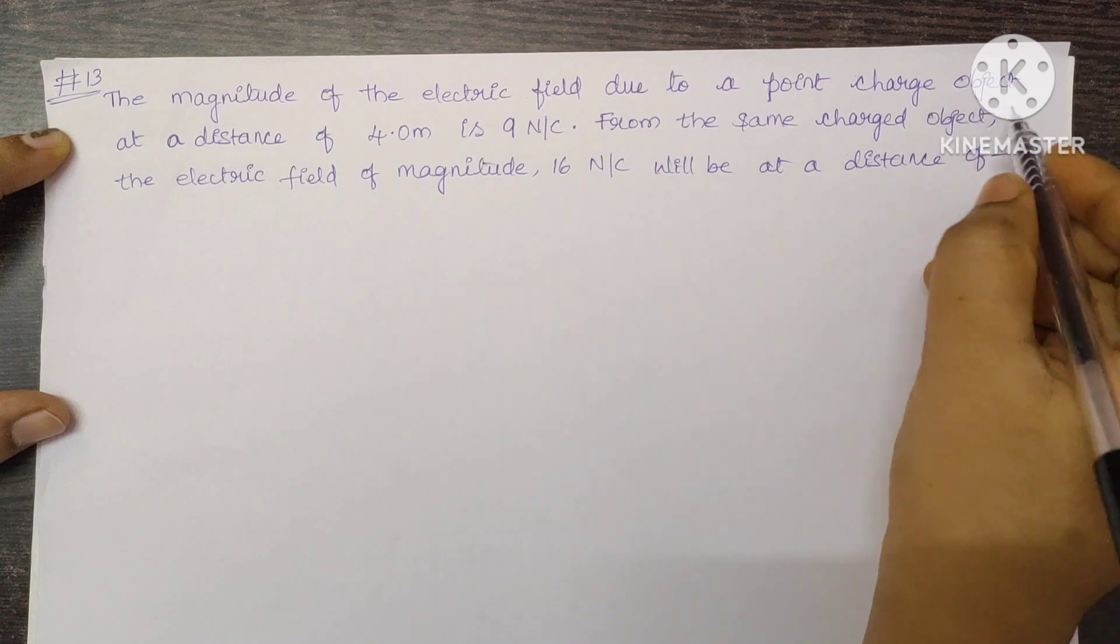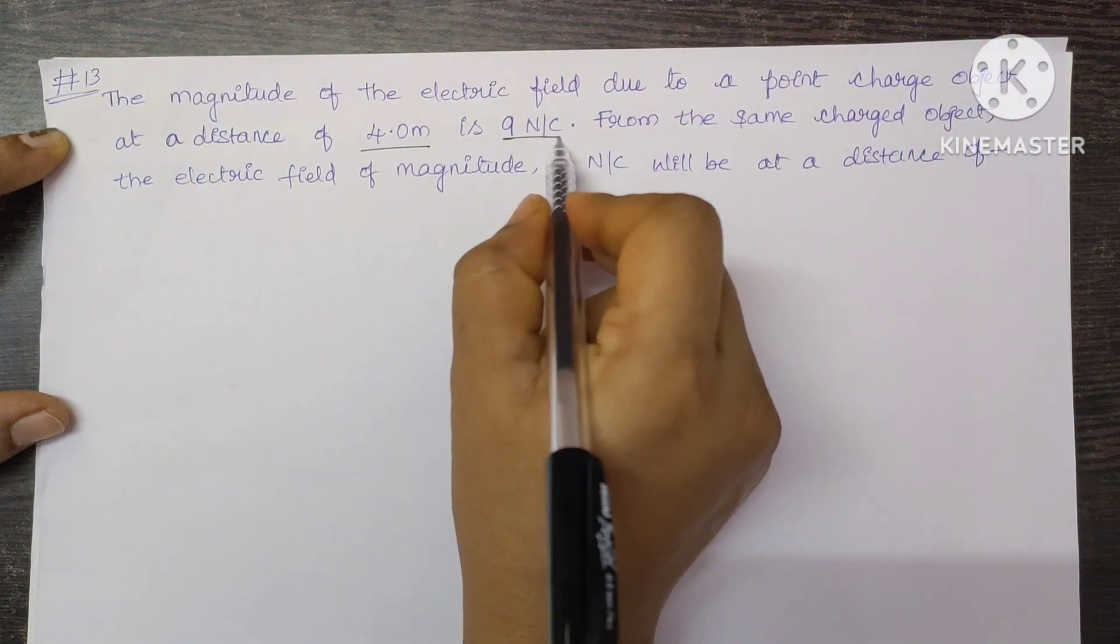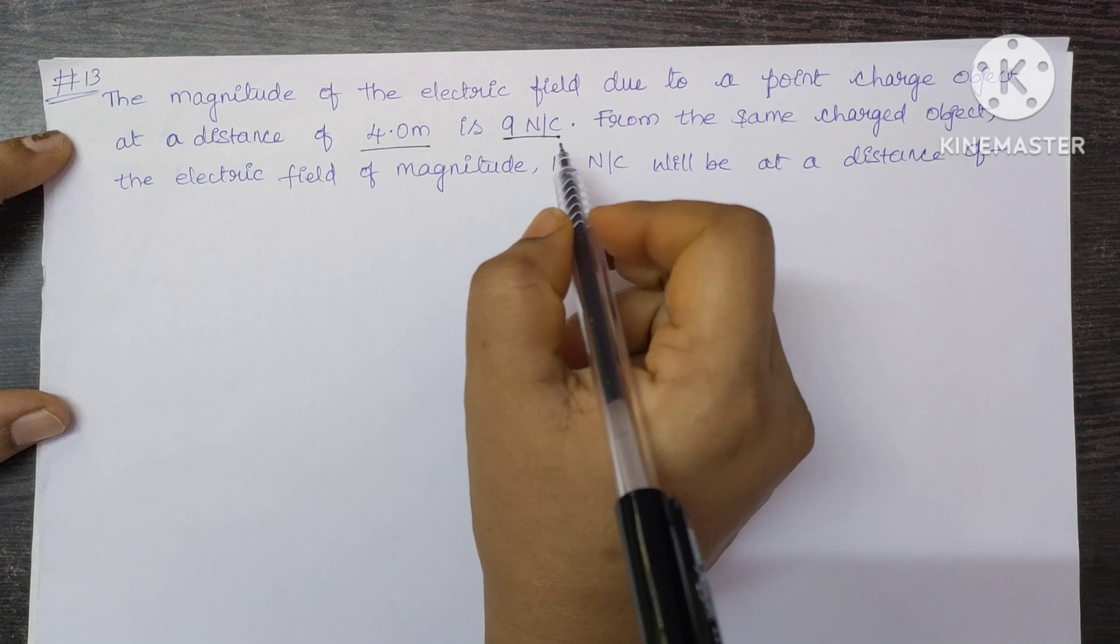The magnitude of the electric field due to a point charge at a distance of 4 meters is 9 Newton per Coulomb.